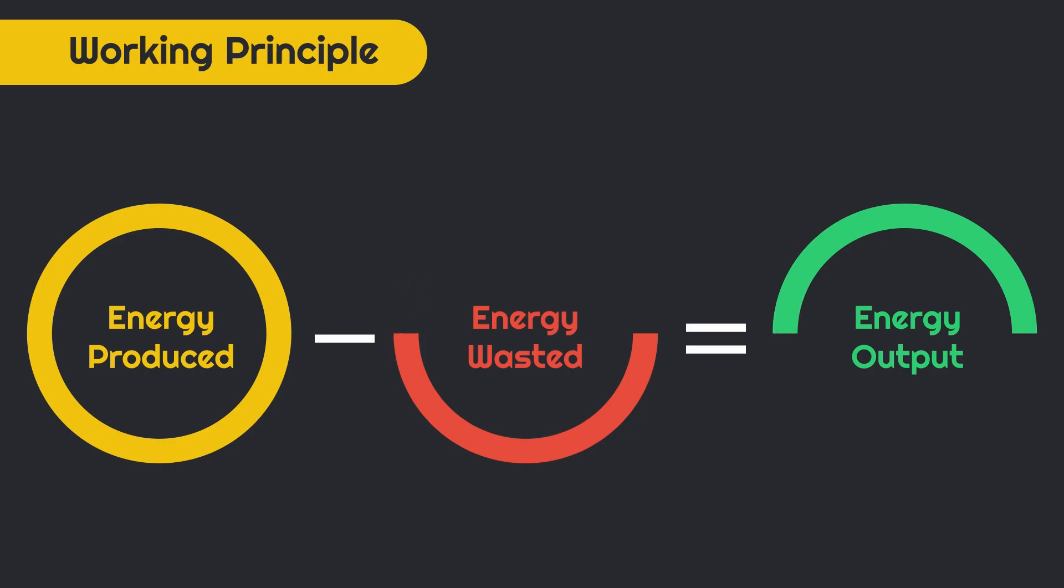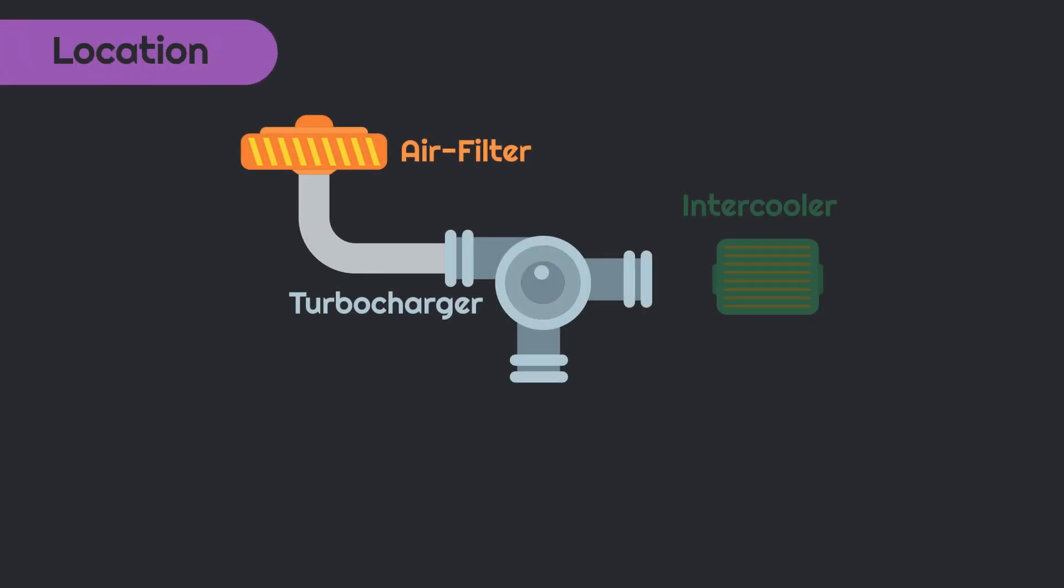Turbocharger is normally mounted after the air filter and before the intercooler. The exhaust gas connection from the exhaust manifold is given to the turbo, which further advances to the catalytic converter.